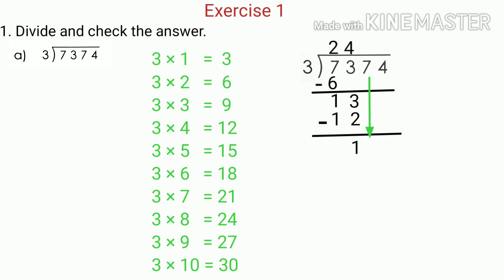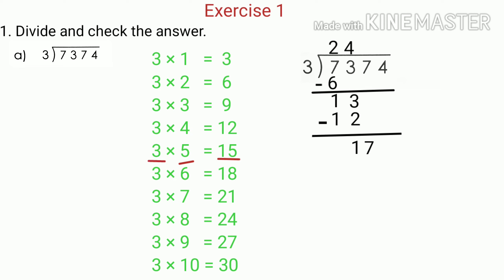Now we bring down the next digit, that is 7, so the number becomes 17. Since 17 is greater than 3, we divide 17 by 3. We know that 5 times 3 is 15 and 6 times 3 is 18. Since 18 is greater than 17, we consider 15 as nearest to 17. So we consider 5 times 3, which equals 15, and write 5 as the quotient above 7. We write 15 below 17 and subtract — 17 minus 15 gives us 2.